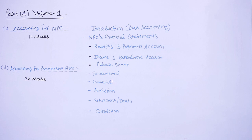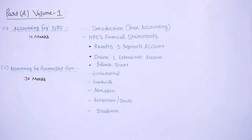You will learn the methods of valuing goodwill — such as the super profit method, average profit method, or capitalization of super profit method. In the next chapter on admission, you will learn how to maintain and record accounts when any partner enters a partnership firm. In the chapter on retirement or death, you will learn how to calculate a retiring partner's share, and what amount we will pay to the nominee of a deceased partner. In the dissolution part, you will learn how to make accounts when a partnership firm closes.